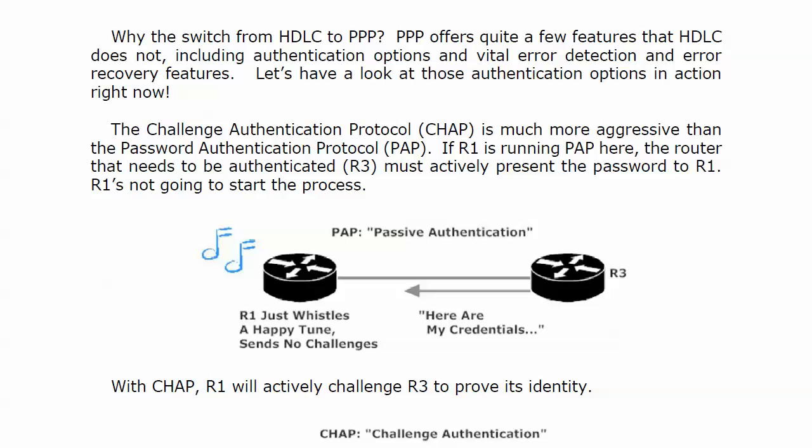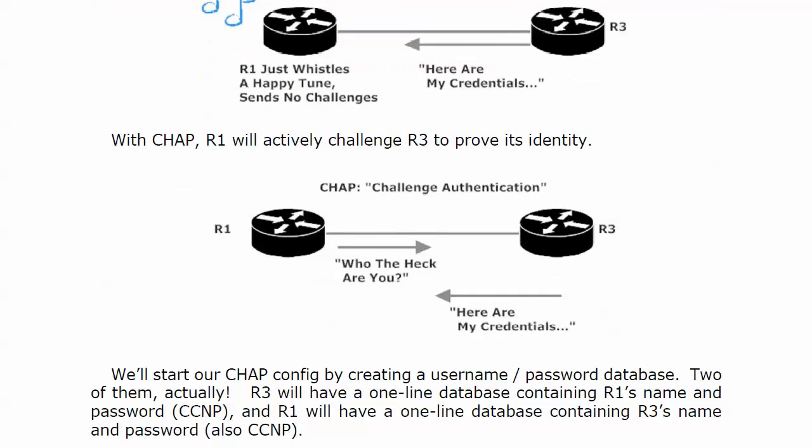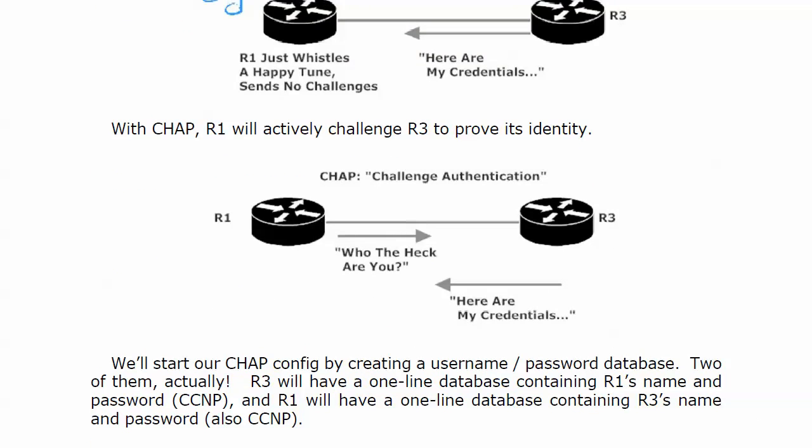Router 1 is just sitting there minding its own business, and then router 3 comes up and says, here's my password. With CHAP, we're going to see an active challenge — router 1 is basically saying, who the heck are you? And router 3 breaks out its credentials and says, here's who I am. I want to show you this config, and we're going to look at it on the board because I want you to see a couple of debugs side by side.